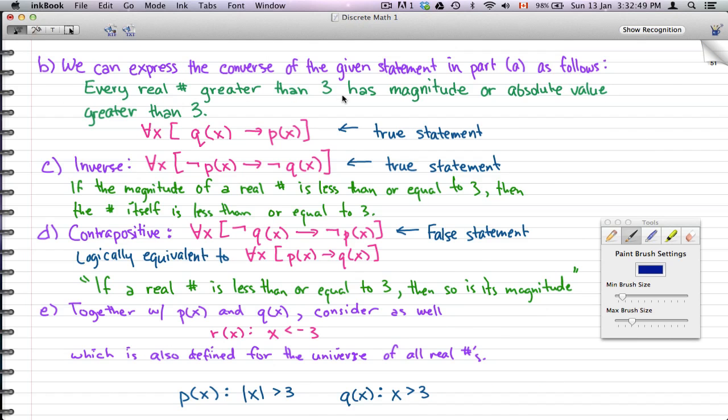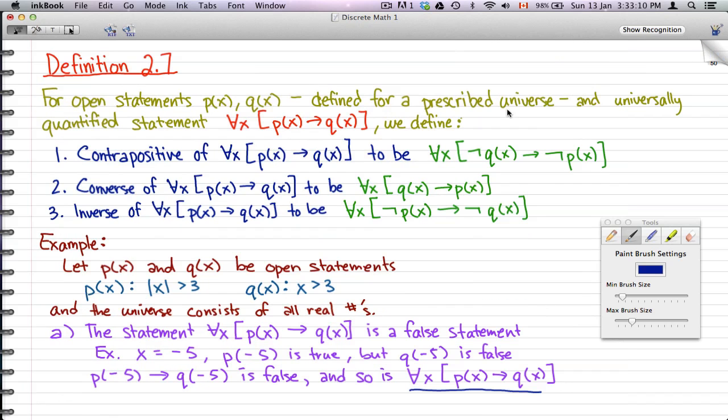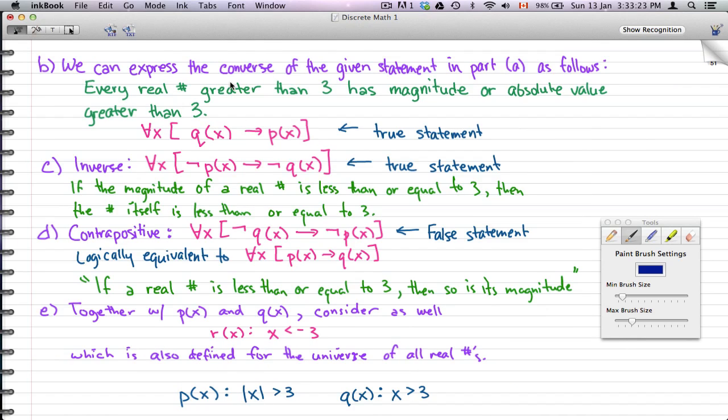Now, looking at another example, we can express the converse of the given statement in part a as follows. Every real number greater than 3 has magnitude or absolute value greater than 3. So, pretty much what this is, is ∀x [q(x) → p(x)]. So, pretty much what we do here is we take this statement and we just flip q(x) and p(x). And like the rule here, that is the converse, and this is what we have.